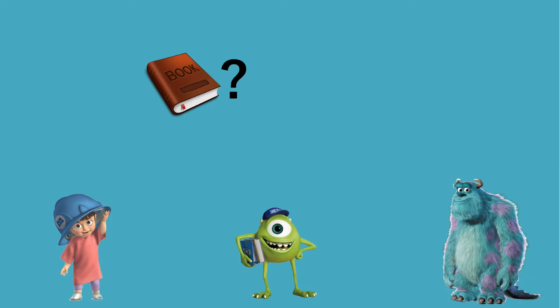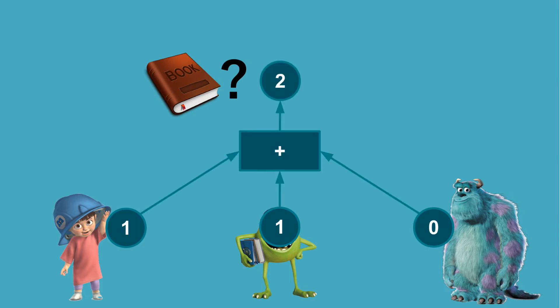So everyone who wants to study another book votes 1 and everybody who wants to go to sleep votes 0. We then simply add up all the votes and find that in this case the majority wants to keep studying. Now, maybe Sully does not want to appear like a weak or lazy or responsible monster. So it would be great for him if the voting was done anonymously.